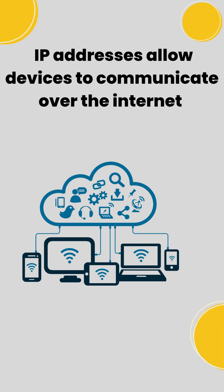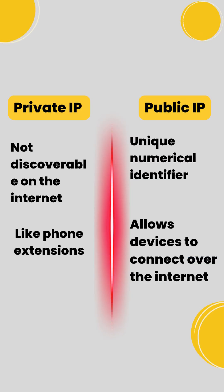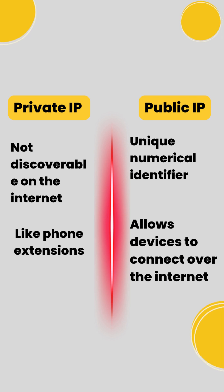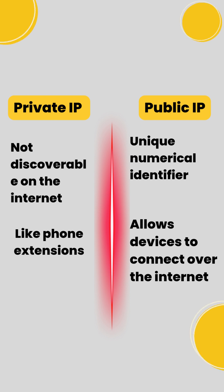IP addresses can be either public or private. Public IP addresses are like the phone numbers in a public phone directory — they are unique across the entire Internet, allowing devices to communicate globally.